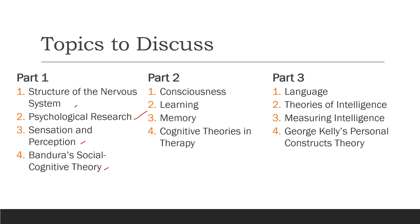When we get to part two, we're going to talk about consciousness and then learning. Eventually, we're going to talk about memory. Our special topic in part two shall be cognitive theories in therapy — how do we explain depression, not from a Freudian perspective, but from a cognitive perspective. We are going to talk about Aaron Beck as well as Albert Ellis. These two are very important contributors to cognitive therapy and cognitive theories.